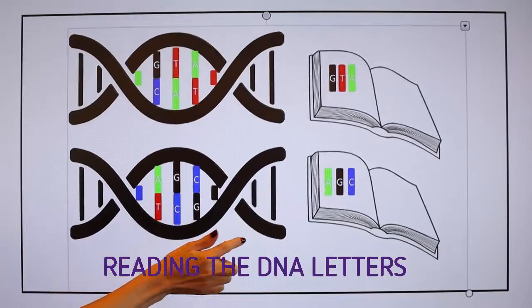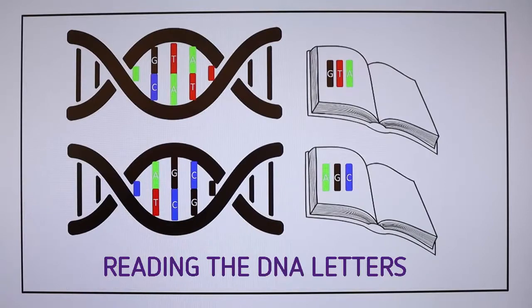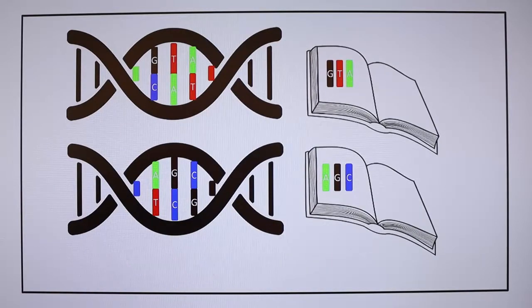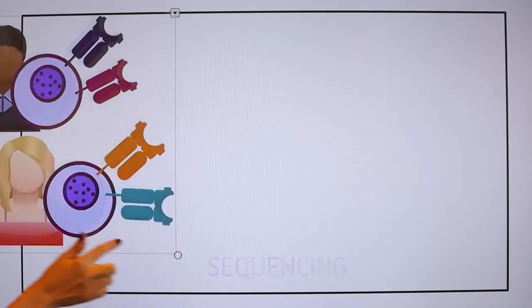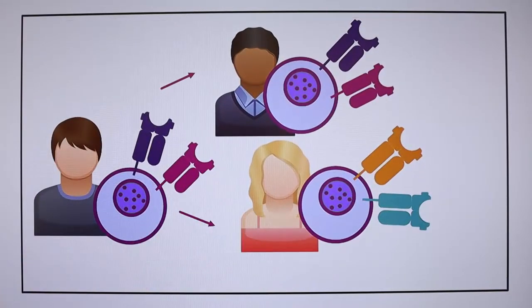By reading the DNA letters, the lab can find out the HLA color for every patient and donor. This is called sequencing. Only the people with the same HLA color are a match for transplantation.